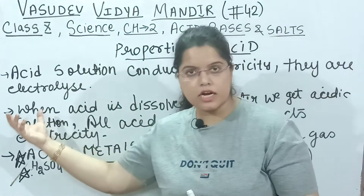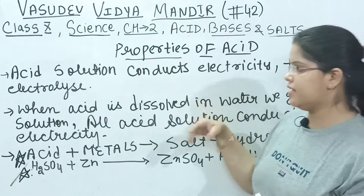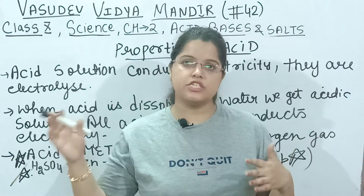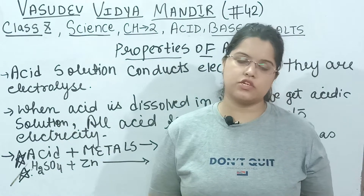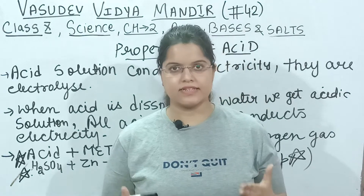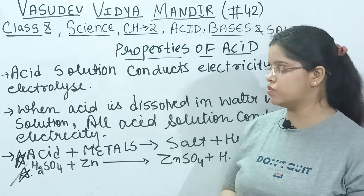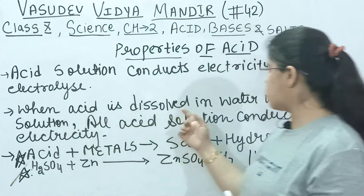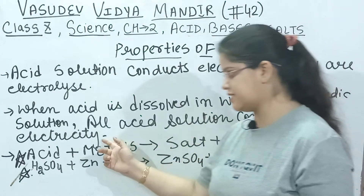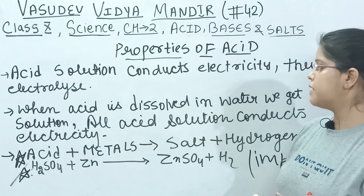Now we are going to learn about acid solutions. Acid solutions conduct electricity — they are electrolytes. When acid is dissolved in water, we get an acidic solution, and all acid solutions conduct electricity.